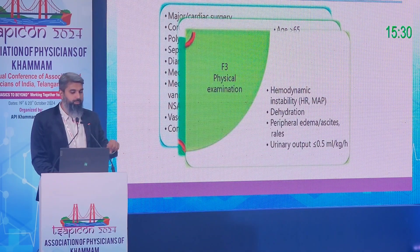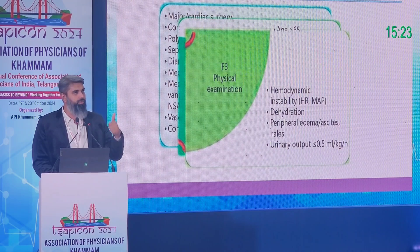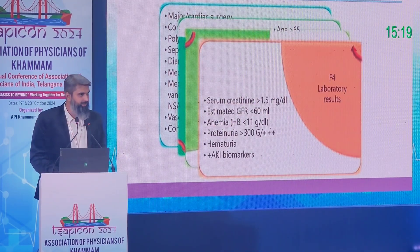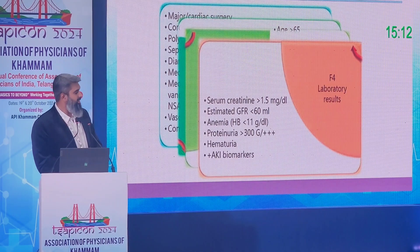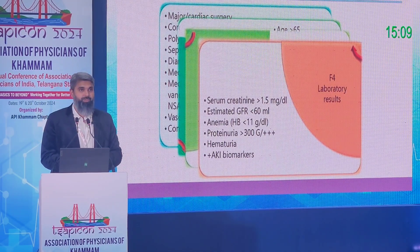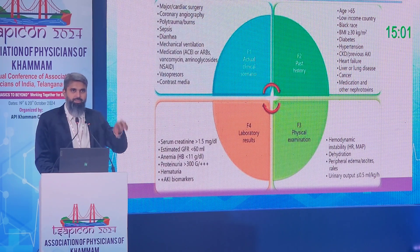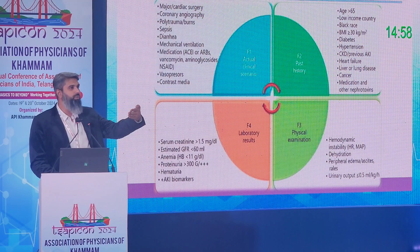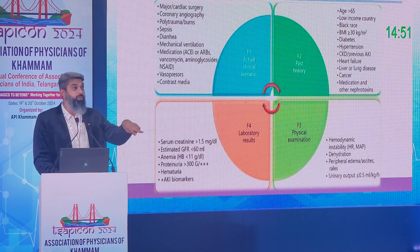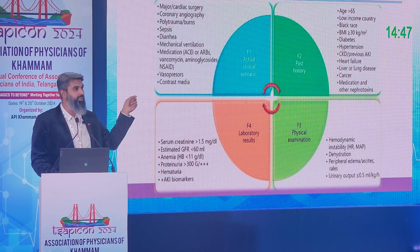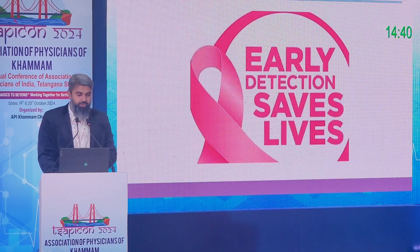Examine the patient properly, especially their volume status. The most common cause of AKI in hospital is hypovolemia, followed by drugs including contrast agents. Checking creatinine daily in any ICU patient is worthwhile — checking only once a week or every four days can be catastrophic, as by the time creatinine rises, the kidney may already be significantly damaged. Creatinine is not a good early marker.